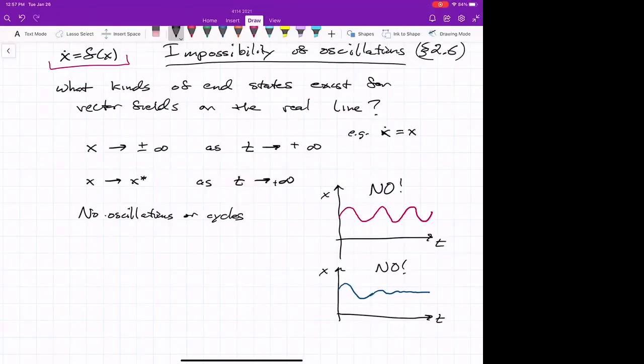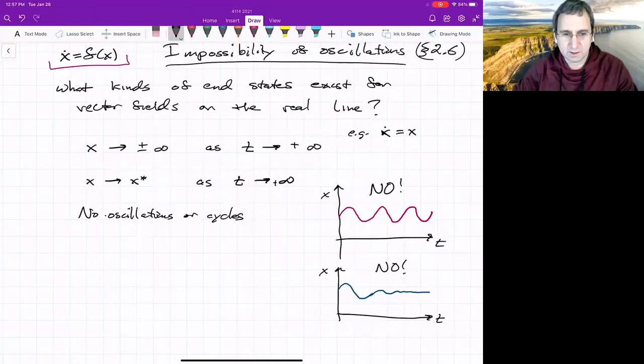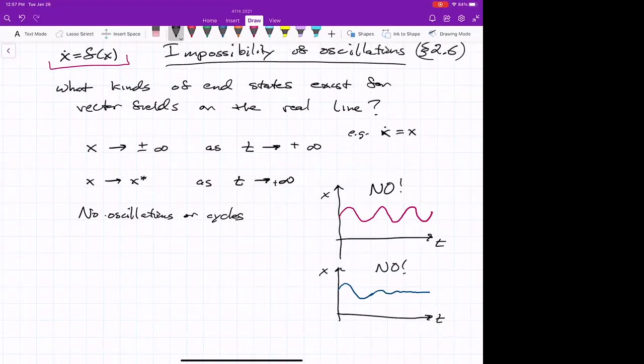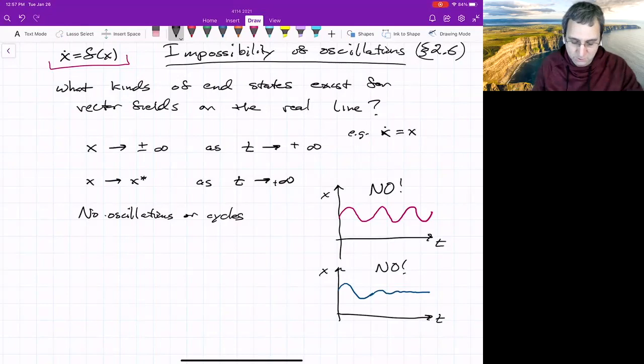And you might say, hold on. I know about the simple harmonic oscillator. And that's just a one dimensional thing. And yet that shows a cycle. So what am I getting wrong here? Anybody know? Where's the simple harmonic oscillator? It's not 1D, it's 2D or three, maybe. Yeah. It's 2D.